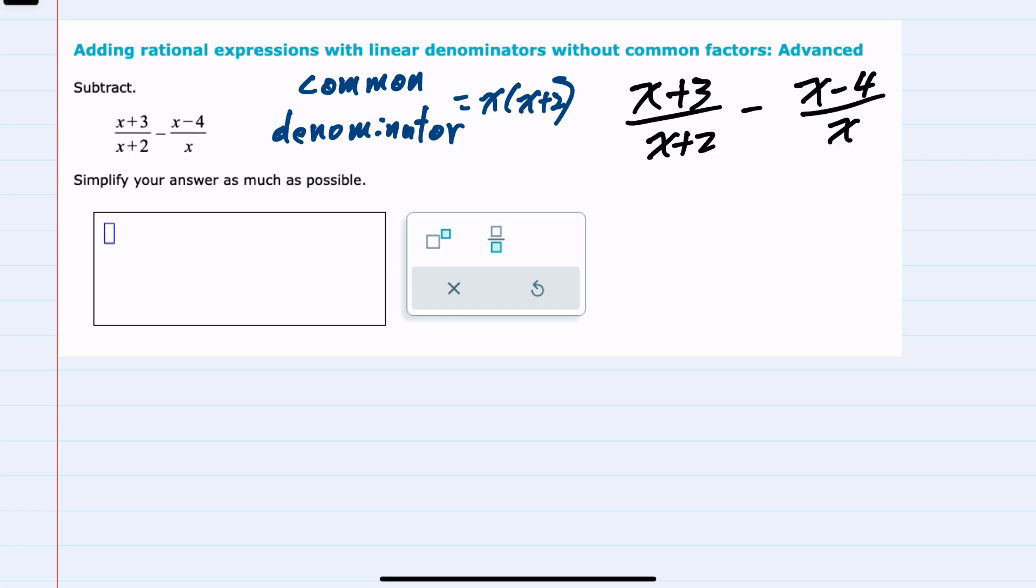Our first step will be to rewrite each of these with an x times x plus 2 denominator, meaning that our first denominator will need that x factor. To multiply the denominator by x means I must also multiply the numerator by x. Our second denominator has the x and needs the x plus 2. To multiply the denominator by x plus 2, we must also multiply the numerator by x plus 2. This will give us that common denominator of x times x plus 2.